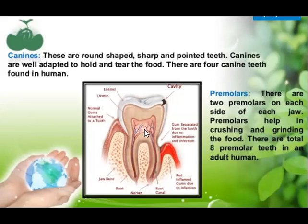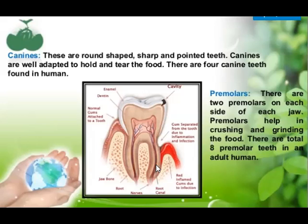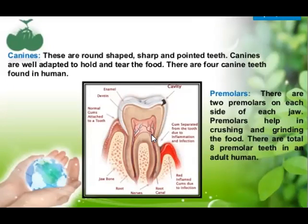Inside the pulp, we have the nerves which feel the sensation. So internally, if we talk about the internal structure of the tooth, it is having three layers: enamel, dentine, and pulp. This is the internal structure of the teeth.